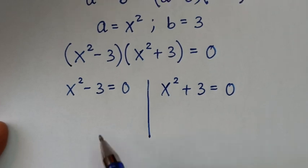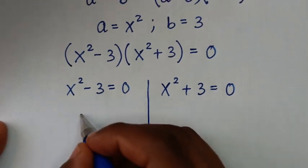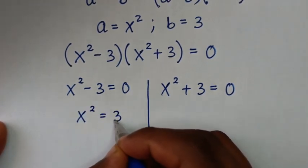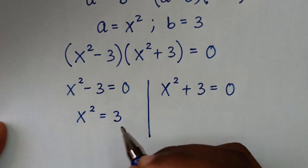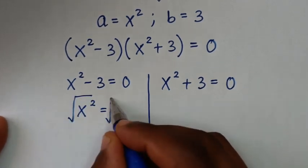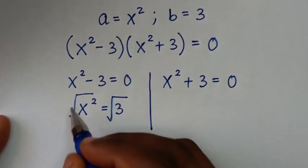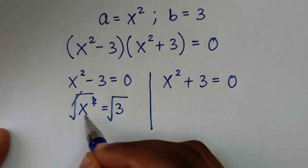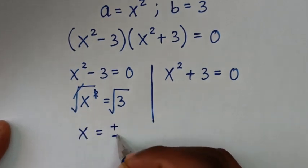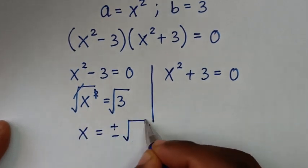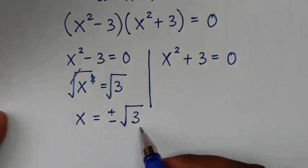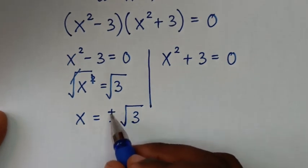From the first solution, we take negative 3 to the other side, so x-squared equals 3. To get x, we apply square root to both sides — the square root cancels the square — giving x equals plus or minus square root of 3. So from here we have two real solutions because of the plus or minus.